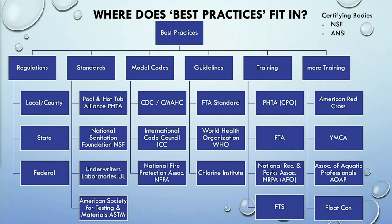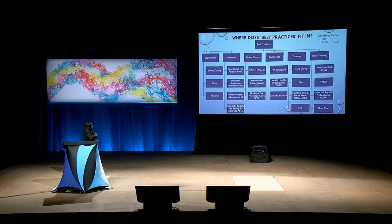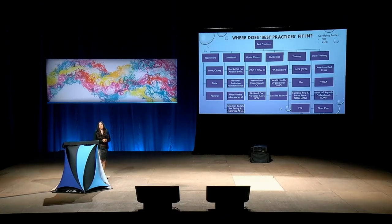Regulations can be interchangeable with the word 'codes' — a lot of states refer to their rules as codes, but that is regulation. A few organizations you may be aware of: the Pool and Hot Tub Alliance (PHTA) is prominent in the pool and spa industry. You also have the American Society for Testing Materials. Those two bodies produce a lot of standards. For model codes, the CDC and the Council for the Model Aquatic Health Code produce the MAHC. The NFPA produces fire codes. There are guidelines from the World Health Organization, plus various training offerings. What you're doing right here is education and training — thank you all for being here.